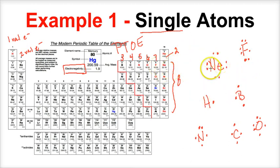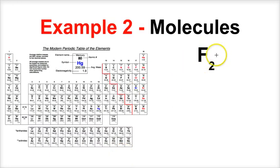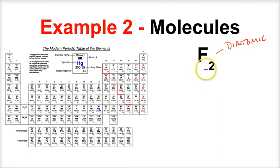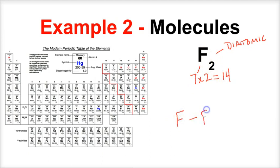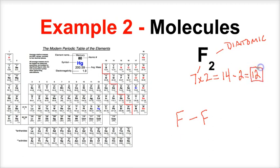Fluorine, F2, is one of the seven diatomic molecules — it always exists bonded to itself if not bonded to another atom. To write the Lewis structure, first count the total valence electrons: fluorine has 7, and there are two of them, giving 14 valence electrons total. Since fluorine is bonded to fluorine, the single bond represents two electrons shared, leaving 12 valence electrons to satisfy the octet rule for both atoms.